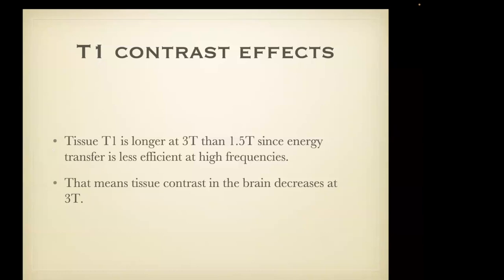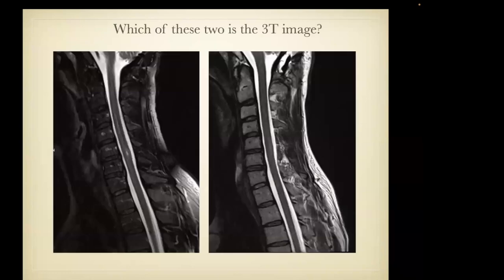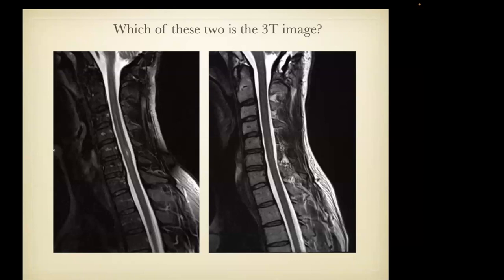Higher field strength also has effects on tissue contrast. The tissue T1 is longer at 3 Tesla since energy transfer is less efficient at these higher frequencies, meaning tissue contrast decreases in the brain at 3 Tesla. As we look at these two images of the same patient, the image on the left shows this area of T2 prolongation in the cord better. But on the 3 Tesla image compared to the 1.5 Tesla image, it's paradoxically less — this comes back to the notion of tissue contrast.